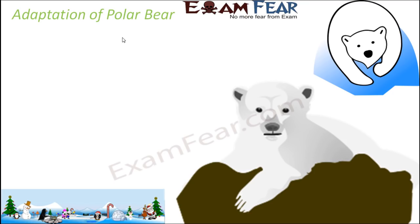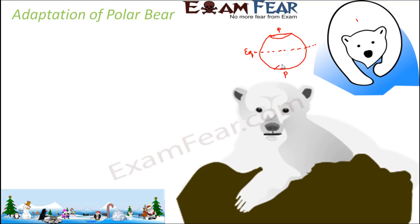Polar bears are generally found in the extremely cold polar regions. The earth is like a sphere, slightly tapered towards both ends. The line running through the center is called the equator, and the two extreme ends are the north pole and the south pole. These two extreme parts are very cold and are covered with snow throughout the year — these are the polar regions.